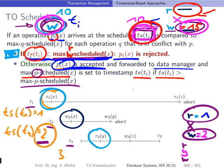Next, T3 performs a read on object Y. Initially the read and write timestamps for Y are not set, so there is no comparison needed. The operation is granted. We then update the read timestamp for Y, setting max R scheduled to 3.